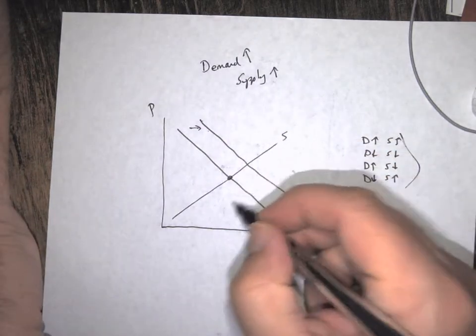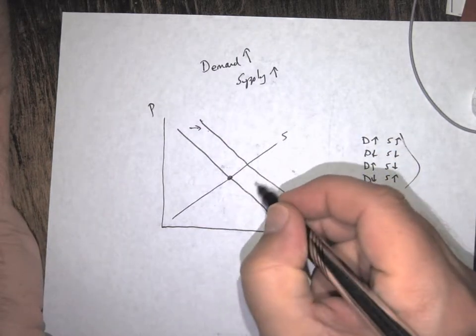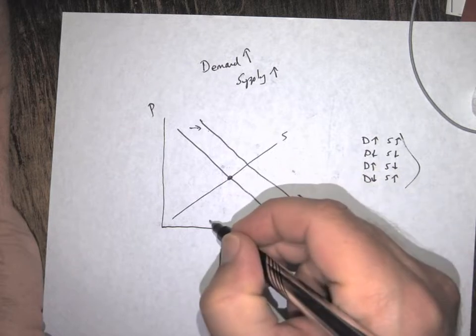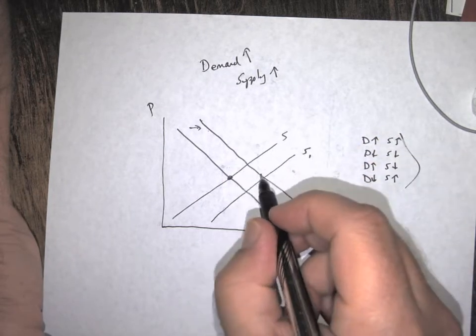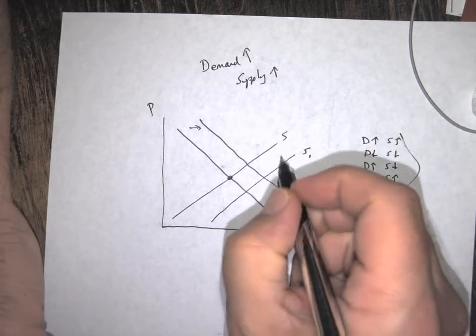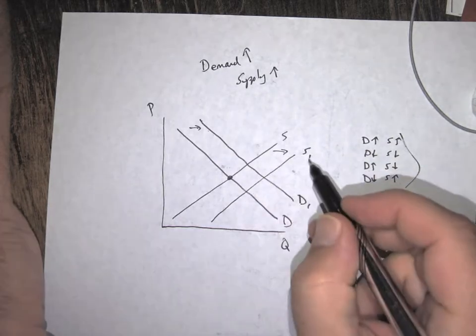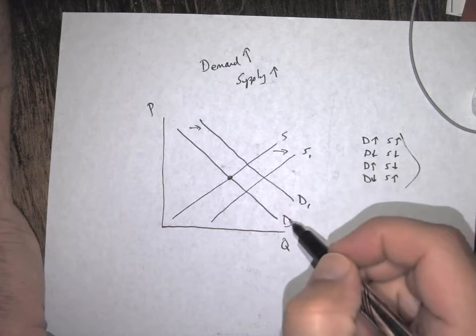increase. So I just try to get it about the same distance right here. Ends up making kind of a perfect diamond or square right there. So what I also have is supply going from S to S1 and demand